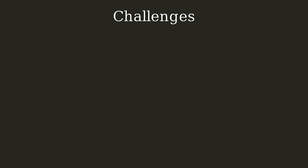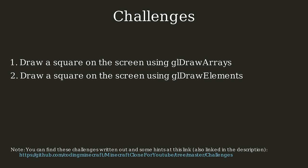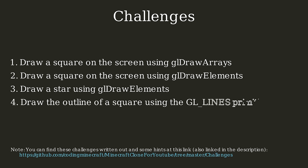We've covered a lot in this tutorial. Unfortunately, in order to draw anything to the screen in OpenGL, you have to know all this prerequisite knowledge. Here are some challenges to reinforce your understanding: 1. Draw a square using glDrawArrays, storing vertex positions in normalized device coordinates ranging from -1 to 1. 2. Draw a square using glDrawElements. 3. Draw a star using glDrawElements. 4. Draw the outline of a square using the GL_LINES primitive. You can find code to set up shaders in the description, and if you have trouble, you can look at my code for reference.